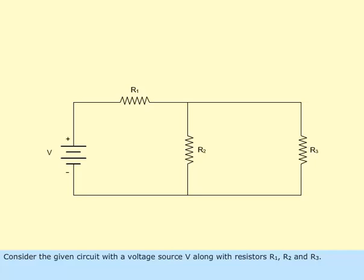Consider the given circuit with a voltage source V along with resistors R sub 1, R sub 2, and R sub 3.